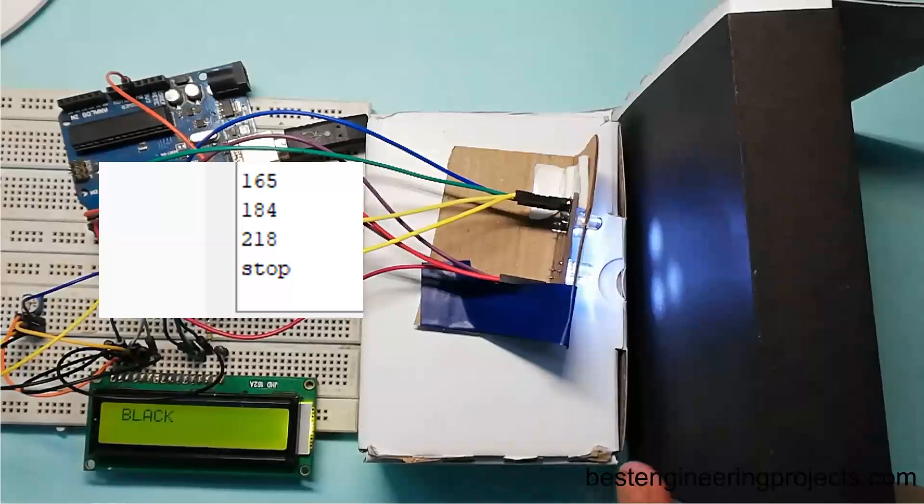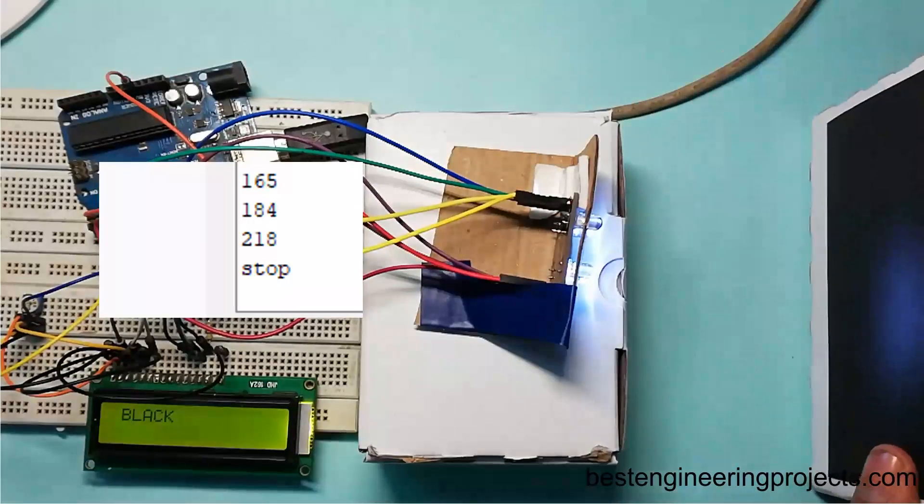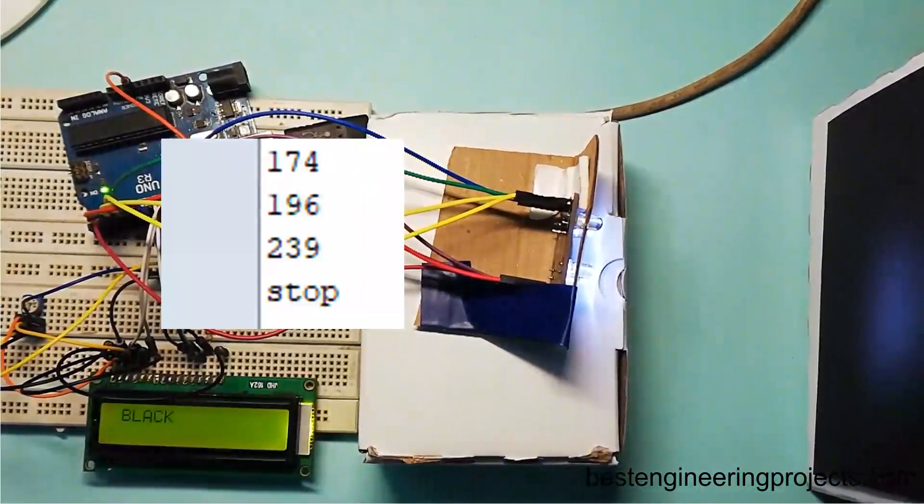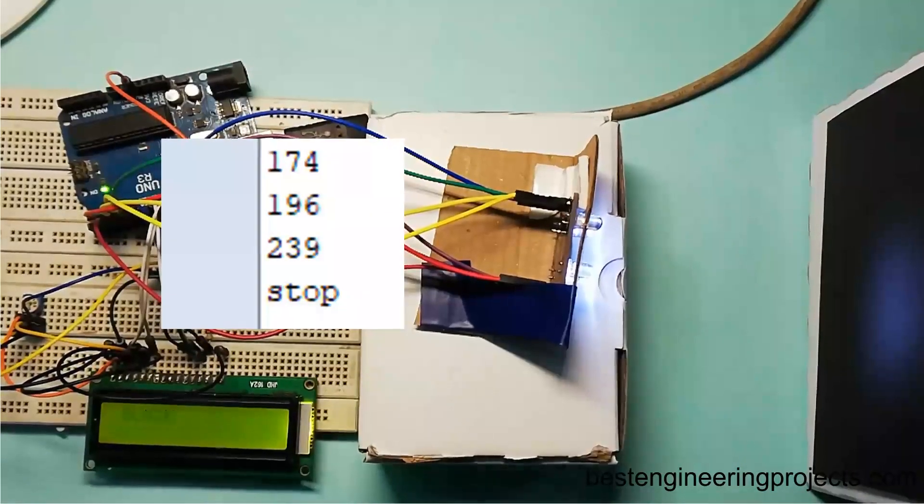Similarly, if I place this object at a higher distance, then I get the value for red, blue, and green as 174, 196, and 239. Note this value because we're going to need this value.